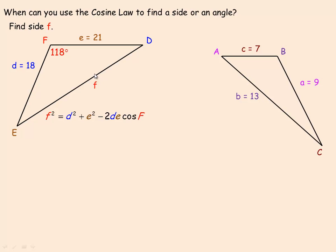This actually works for right triangles too. If the angle were 90 degrees, the cosine of 90 is 0, so this whole term drops out and you actually get Pythagoras' theorem. You might have noticed the first part of the cosine law looks like Pythagoras' theorem — and that's because Pythagoras' theorem is actually a special case of the cosine law when the angle is 90 degrees.